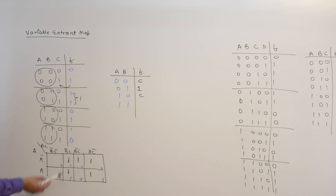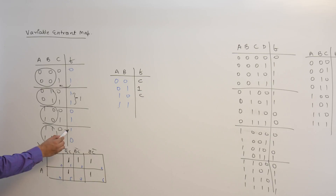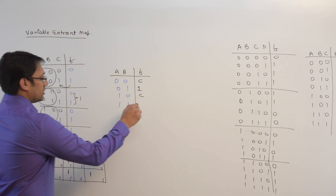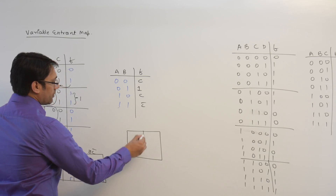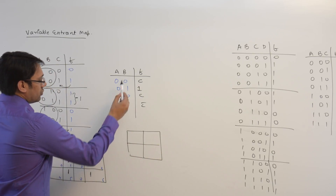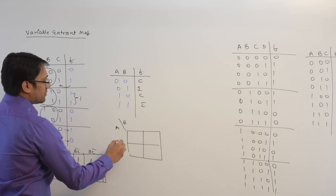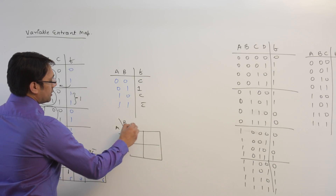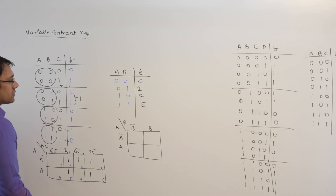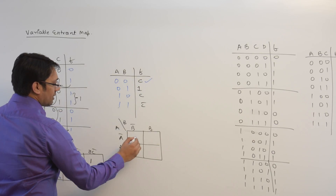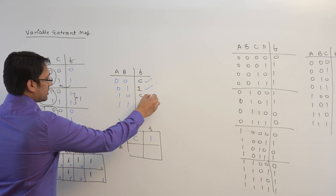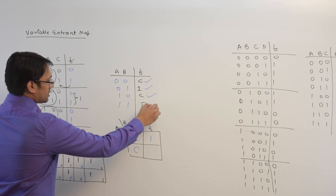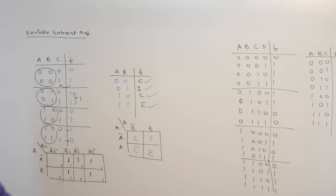When the combination is 1-1, the function F is behaving as the opposite of C — it takes the value C-complement. So this entry represents C-complement. If we now make a K-map for this function, we can represent the same function with a two-variable K-map, where the cells contain: C, 1, C, and C-complement.